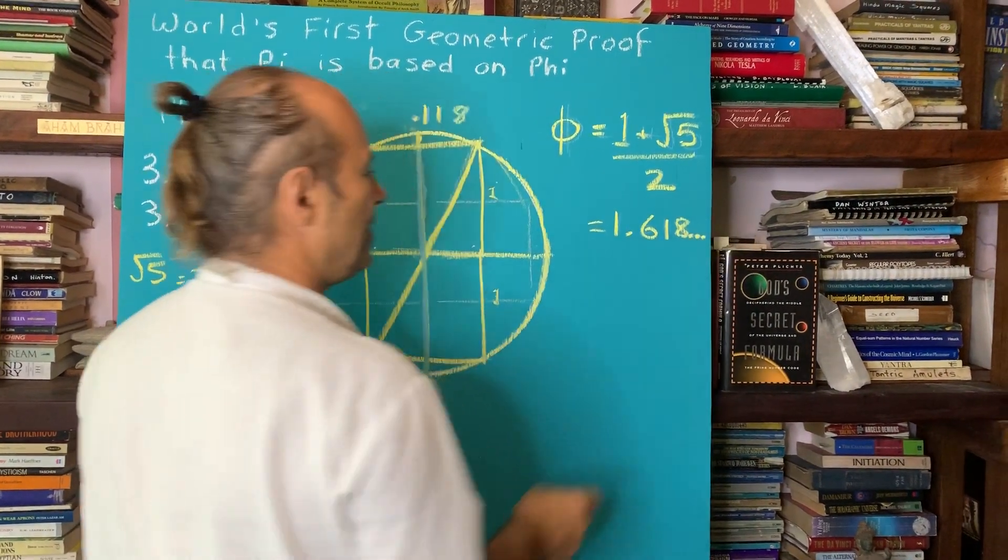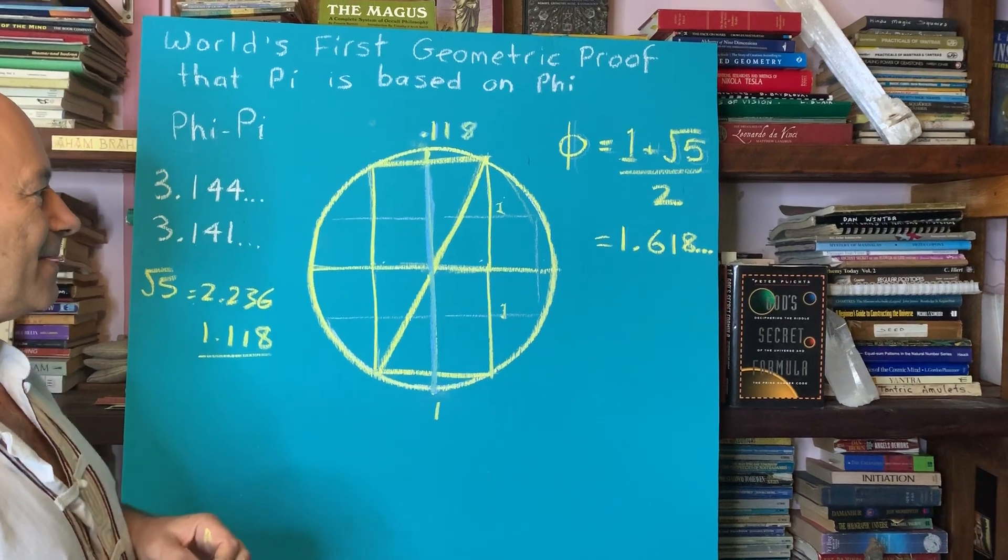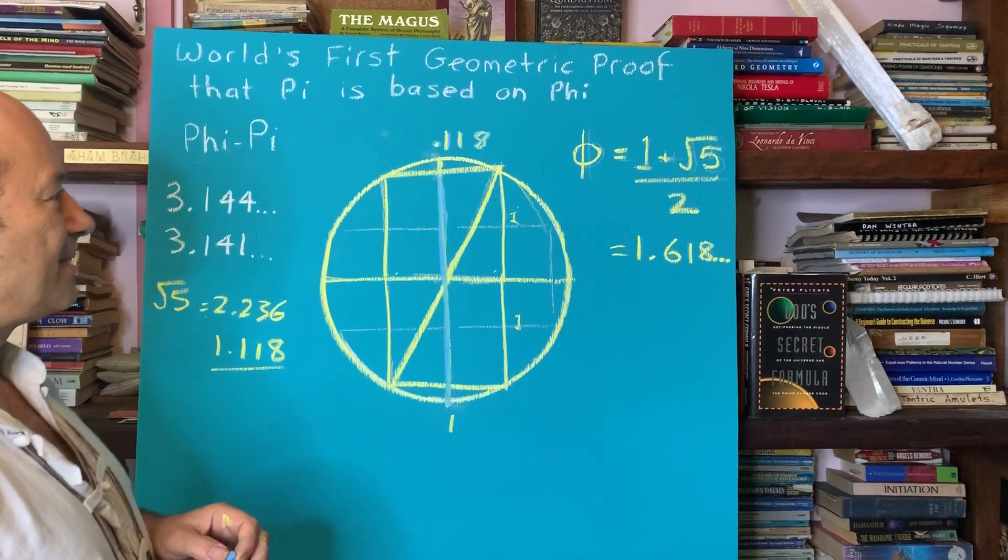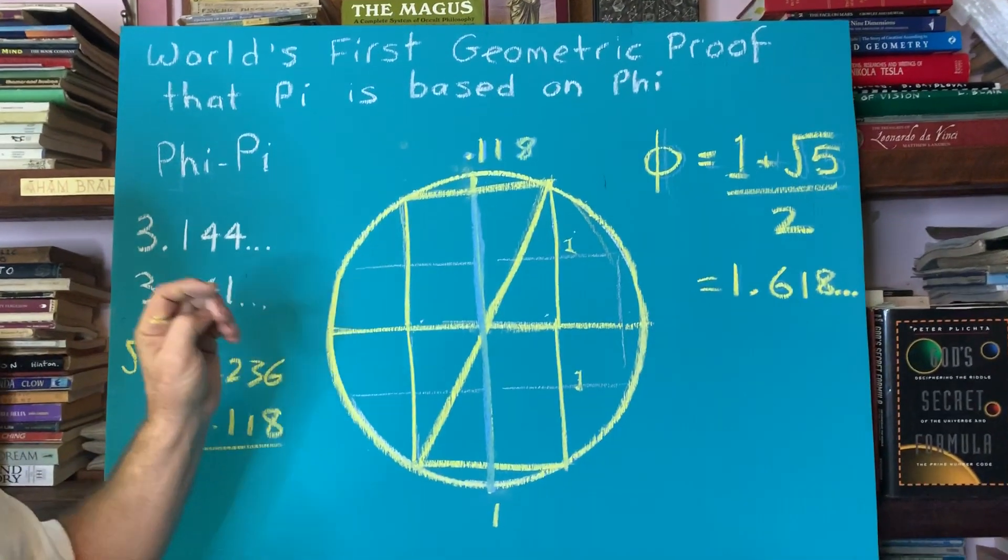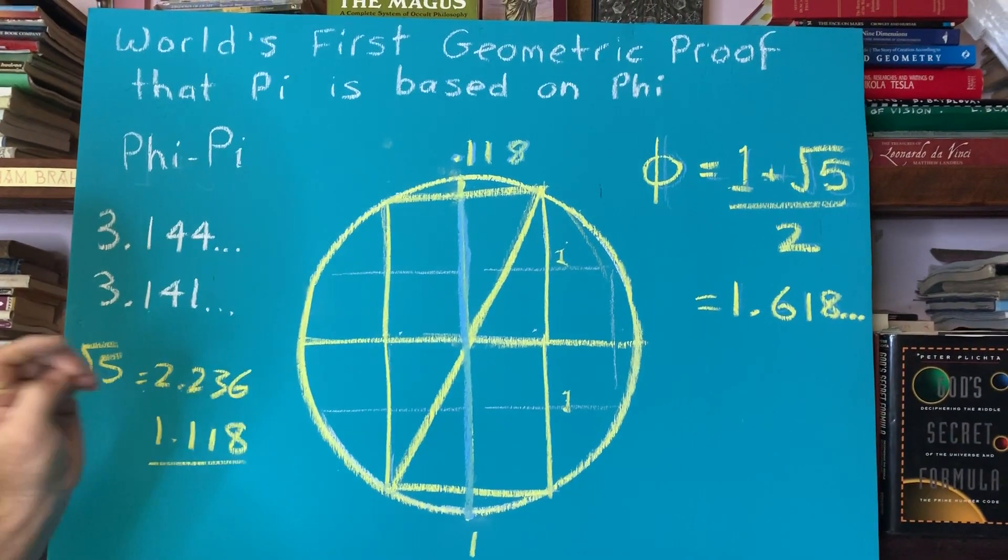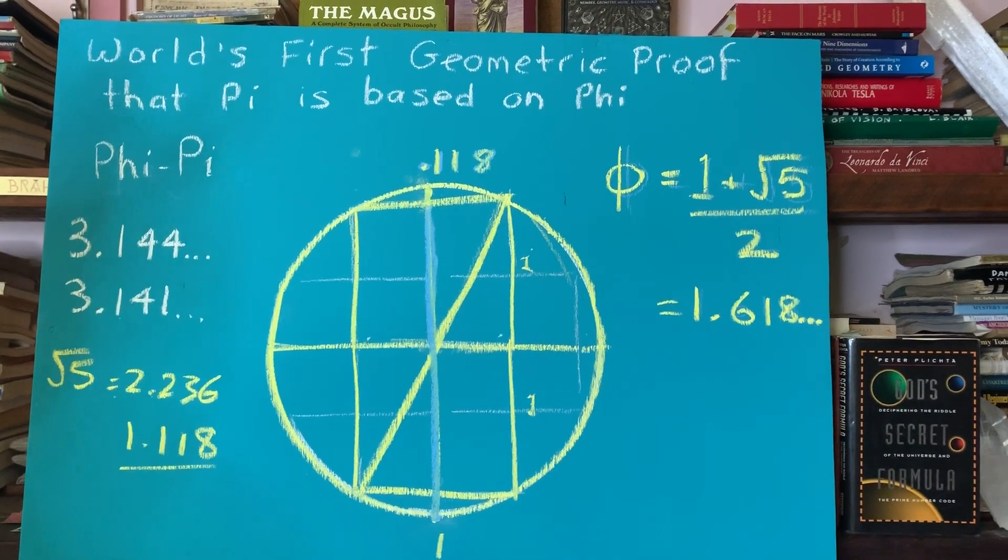So we need to know this to get the definition of the golden ratio, 1.618. When we go 1 plus root 5 divided by 2 equals 1.618. That's the number for the golden ratio. So we've set up a basic structure. It's like a skeletal structure to connect phi and pi.